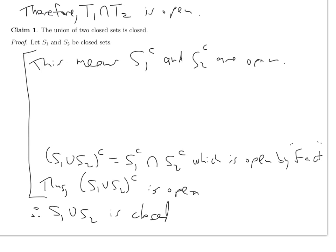Think about how your proof addresses the fact that the number of sets you're taking the union of is just two instead of possibly countably many. That is significant. That's why it's sort of subtle to be able to argue in terms of limit points.